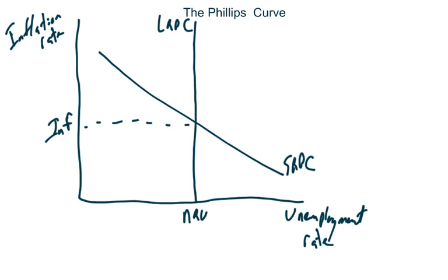First of all, LRPC and SRPC — that stands for the long-run Phillips Curve and the short-run Phillips Curve. The NRU is short for the natural rate of unemployment, which is 5%. We have the unemployment rate and the inflation rate on this graph. This graph is used to measure the misery index.